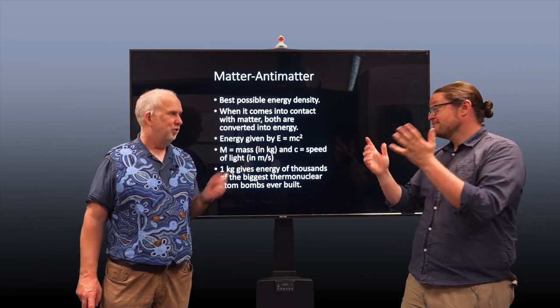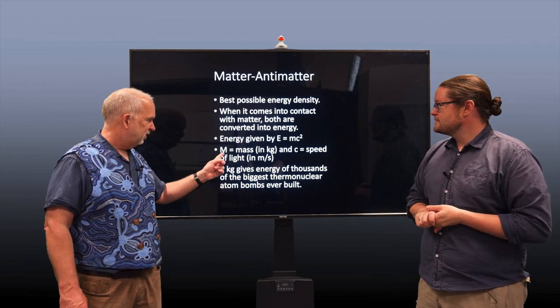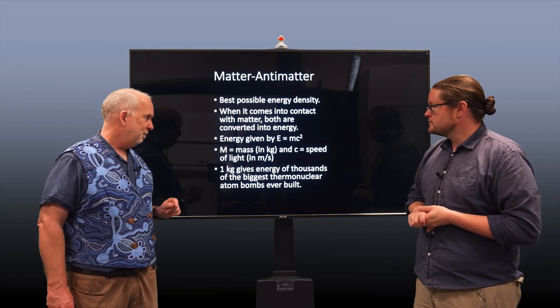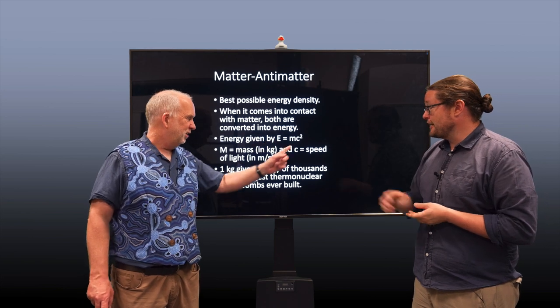The energy is given by E equals mc squared, the most famous equation ever. So what happens is the m is the mass in kilograms and c is the speed of light in meters per second. So if you take one kilogram, so m is one, c is three by ten to the eight, three by ten to the eight squared is about ten to the seventeen.